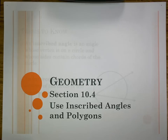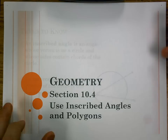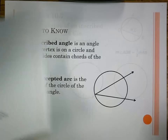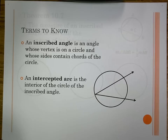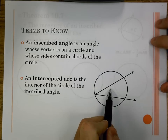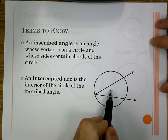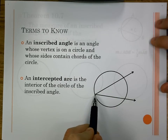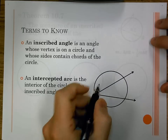This video covers section 10.4, which is using inscribed angles and polygons. This is where we go away from central angles and introduce a new type of angle called the inscribed angle. For a central angle, the vertex is at the center. For an inscribed angle, the vertex is on the circle and the sides contain chords of the circle.